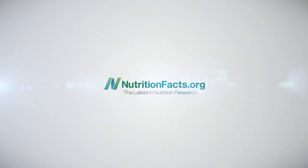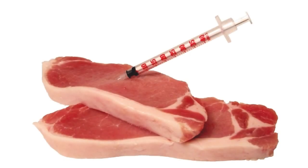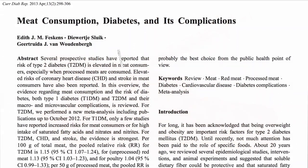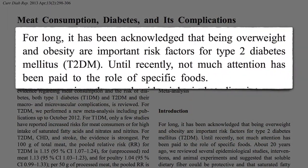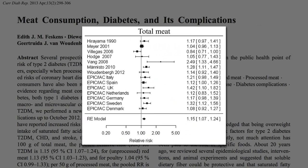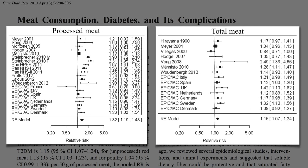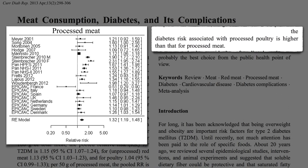What is the risk for type 2 diabetes? We've known that being overweight and obese are important risk factors for type 2 diabetes, but until recently not much attention has been paid to the role of specific foods. This 2013 meta-analysis of all the cohorts looking at meat and diabetes found significantly higher risk associated with total meat consumption, and especially processed meat, particularly poultry. But why?